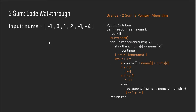Let me go over the code — everything highlighted in orange is the two-sum algorithm. To extend two-pointer to incorporate three sum, we first sort the nums array, giving us: negative four, negative one, negative one, zero, one, two. Then we enter the for loop.